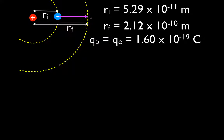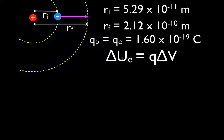We want to calculate the change in potential energy, and this is the equation we use. The change in electric potential energy is on your AP Physics equation sheet. It is equal to the amount of charge — that's the electron, because that's what we're going to move — times the potential through which it is moved. There's a potential created by the positive proton in the nucleus, and when we move the electron from one location to another, it moves through a potential difference — that's what delta V stands for.